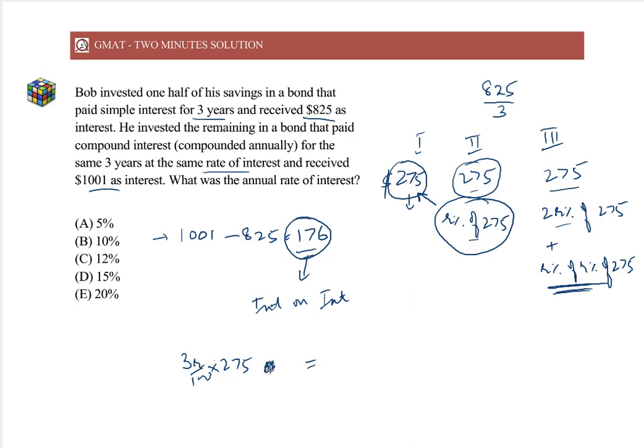This equals—let's ignore this—this equals $176. Now this is our calculation. We need to get R percent. Of course, it will be an approximate value because we have ignored this.